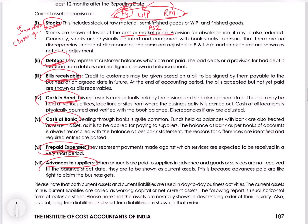Advance to suppliers means money given to creditors or suppliers as advance for future purchases — that amount is also an asset. Whatever the company owns where it is not yet due to the company is an asset. If it is due to the company and it is making payments, it becomes an expense. But if it is not yet due and payment has been made, it is prepaid or advance, so it becomes an asset to the company. These are the current assets.